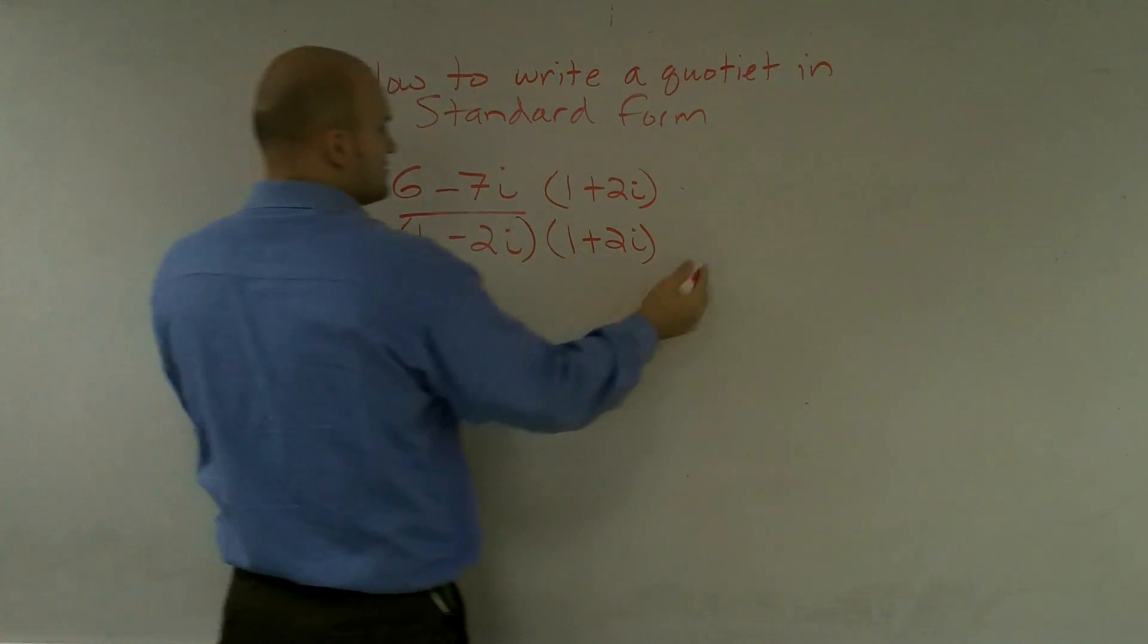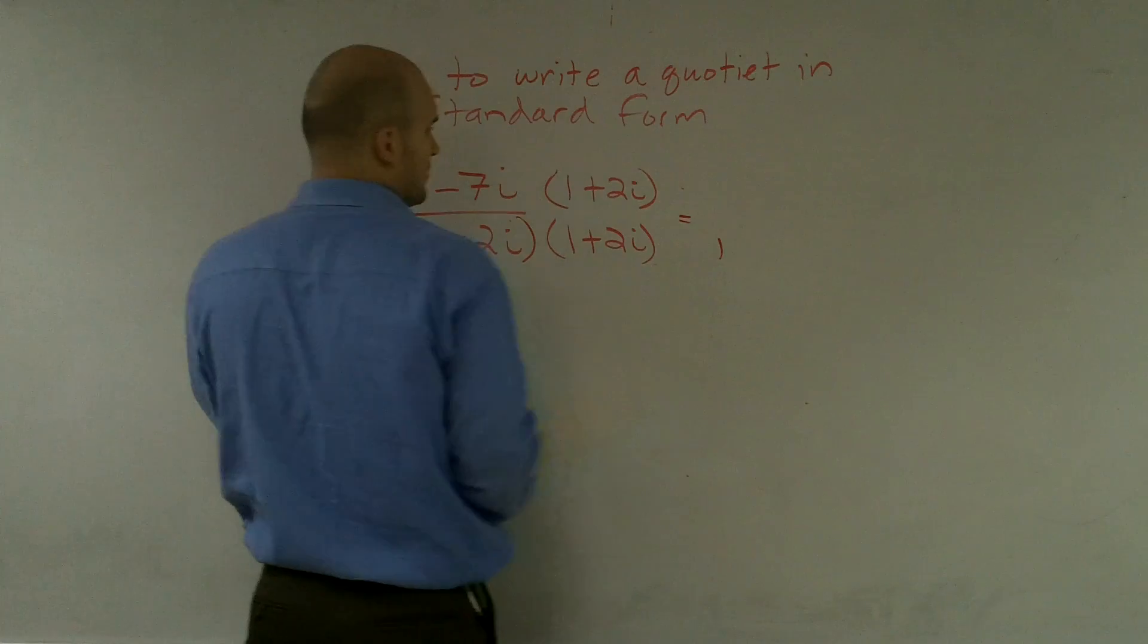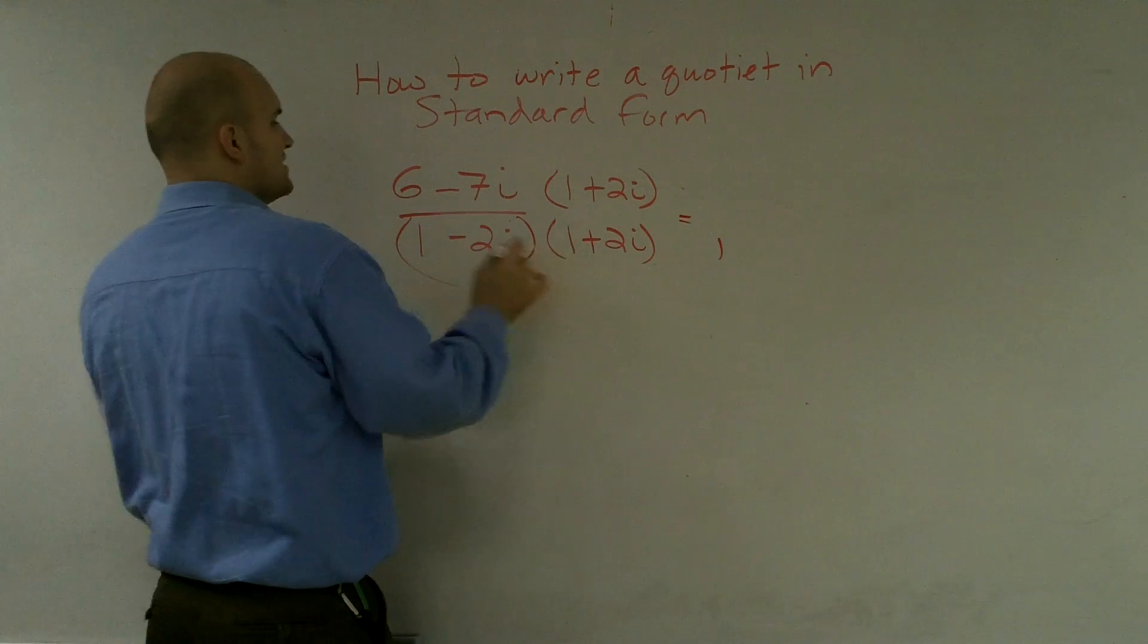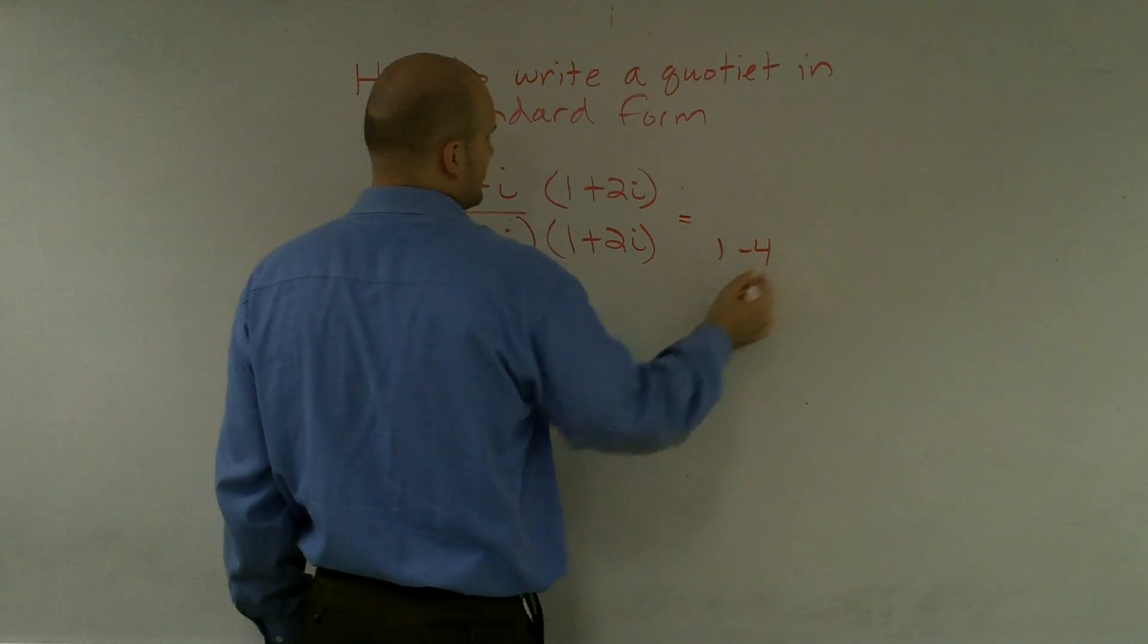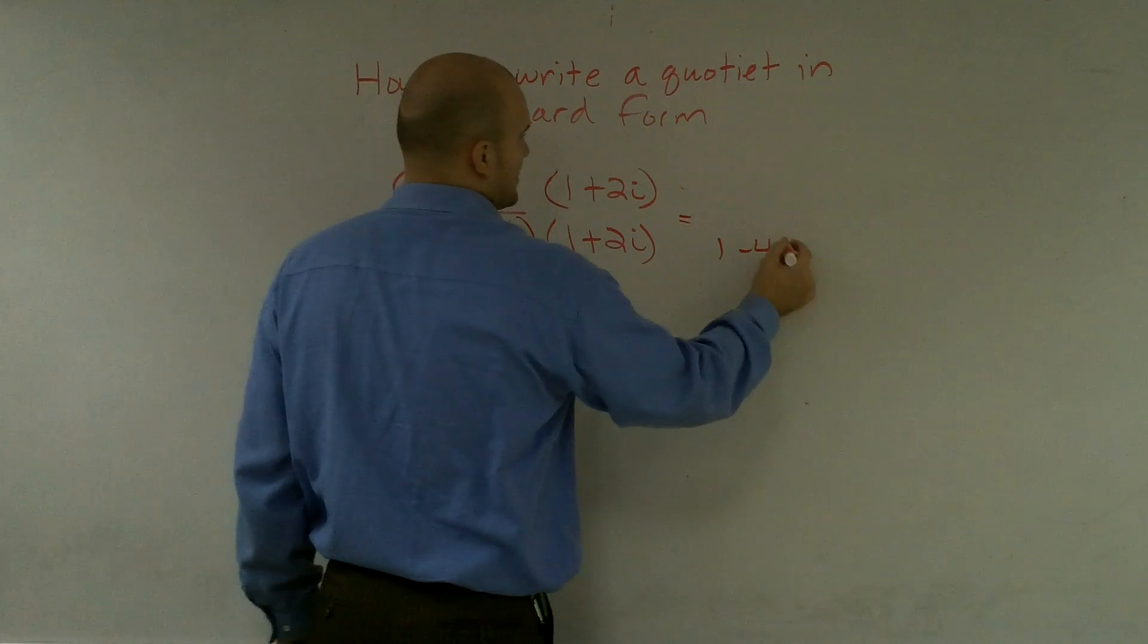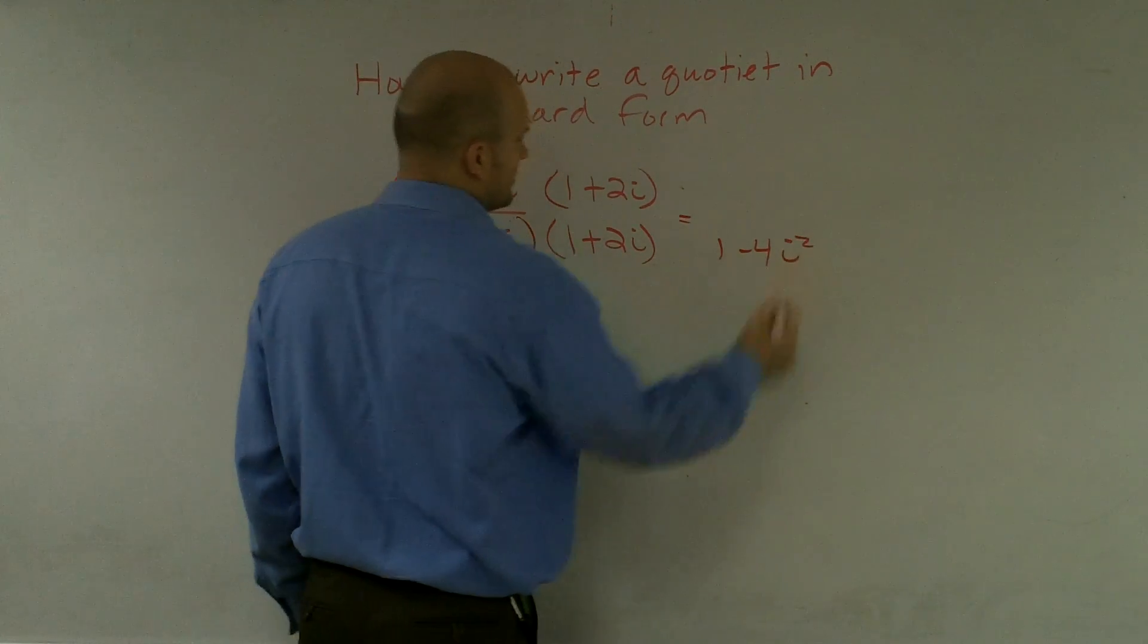I know that I'm going to multiply my 1s, which is going to equal 1 squared, which is 1, and then minus negative 2 times 2 is going to be negative 4i squared. And I'll get to the i squared here in just a second.